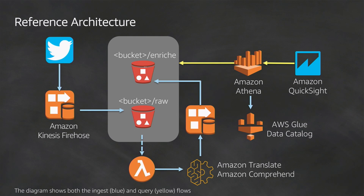Sitting between those is Kinesis Analytics, which is the ability to run regular SQL queries on streaming data. If you have JSON coming in, you can run real-time ML on that streaming data, which is really cool.